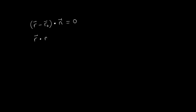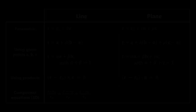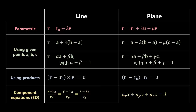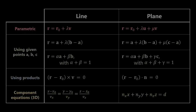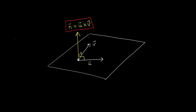To obtain the component equations, we rearrange r dot n equals r0 dot n, then write it in component form. The right-hand side is all constants, so we do the dot product and arrive at a single number d. The left-hand side expands using the dot product, arriving finally at the equation of a plane in component form: nx times x plus ny times y plus nz times z equals d. To convert between forms, as long as we have two vectors u and v contained in the plane, we can find the normal vector n as their cross product. For working with normal vectors, we prefer the normalized unit normal vector, obtained by dividing n by its length.